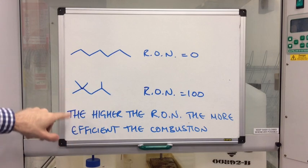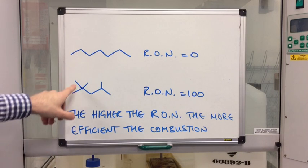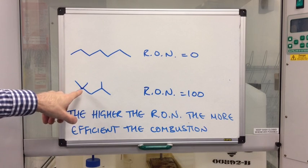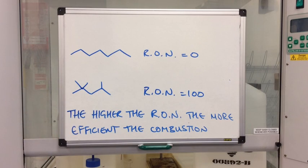The branched alkane, so this is one, two, three, four, five. So pentane, we've got three methyl groups on carbon number two and number four. So this would be two, two, four, tri-methyl pentane. That's got an RON value of 100.